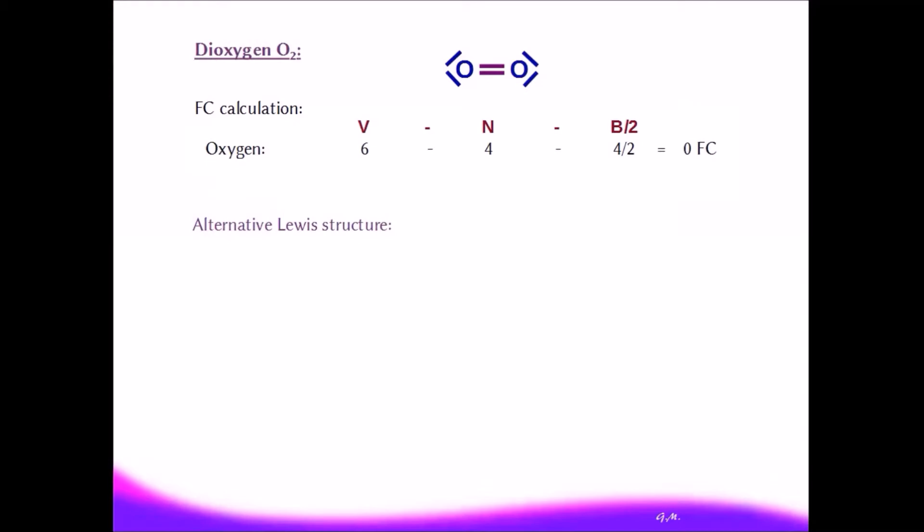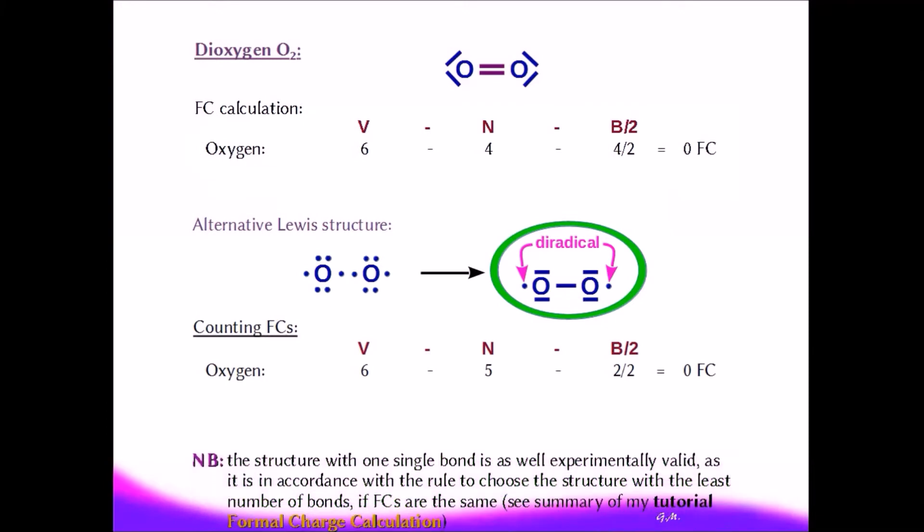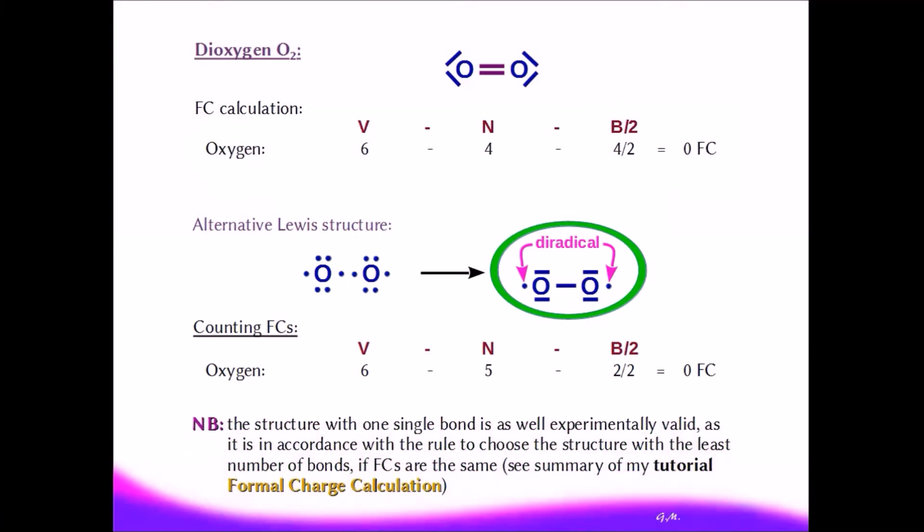Featuring a diradical, we draw the Lewis structure like this, with a single bond between the oxygens and two radical electrons on the outside of the molecule. Formal charges are zero here as well. An important argument in favor of this structure is the high reactivity of dioxygen, ascribed to the radical electrons, and the fact that there is only one bond compared to the foregoing structure.